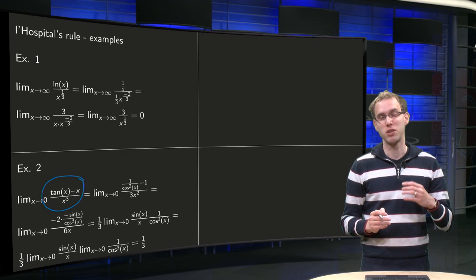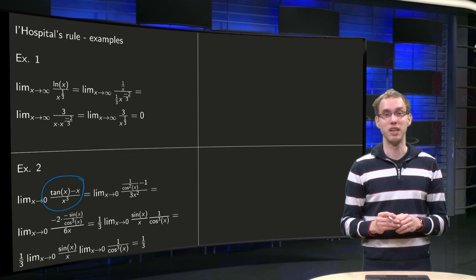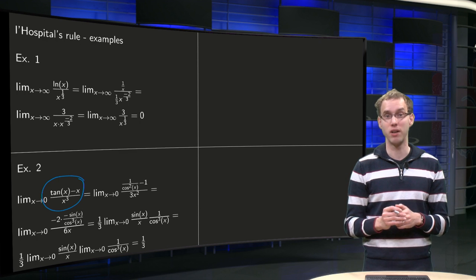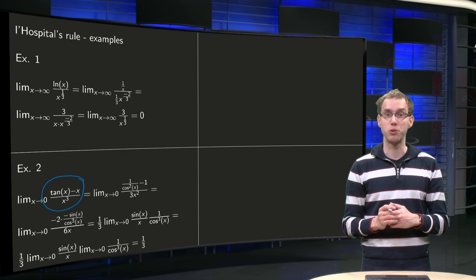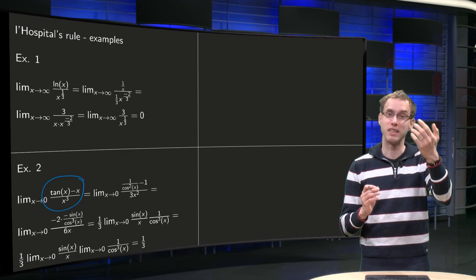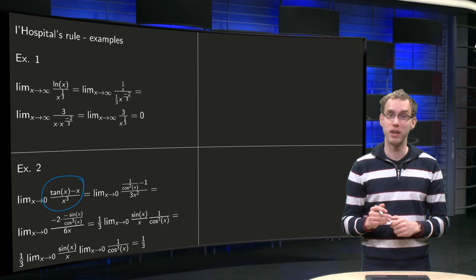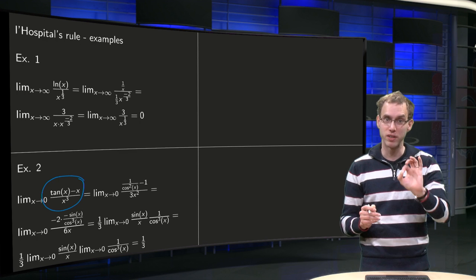So what happens if x goes to 0? Well, the tangent of x equals 0, x equals 0, x cubed equals 0, so we have 0 divided by 0. Which means that we can apply L'Hopital's rule. So we differentiate numerator and we differentiate denominator, so we take the limit of f prime over g prime.